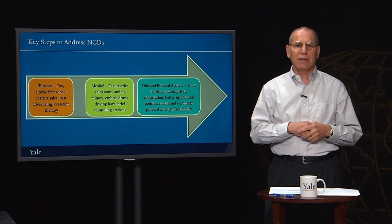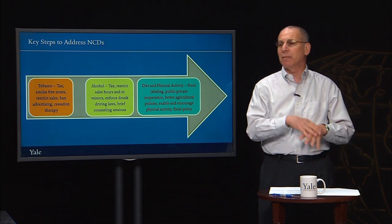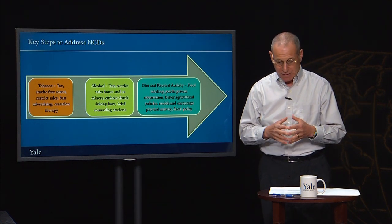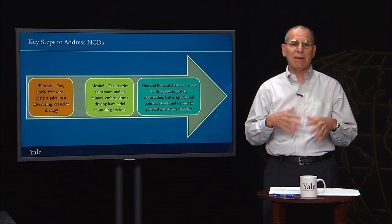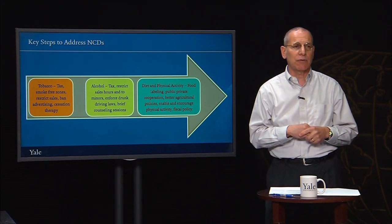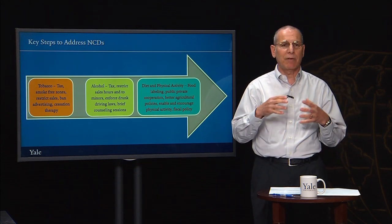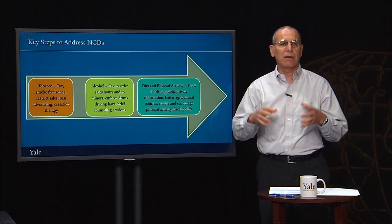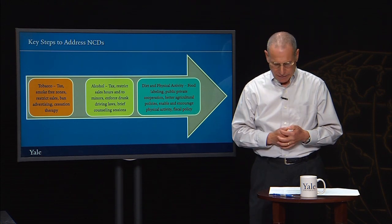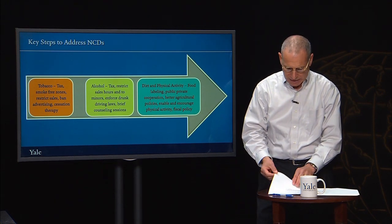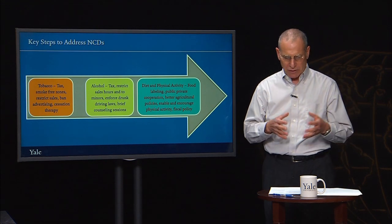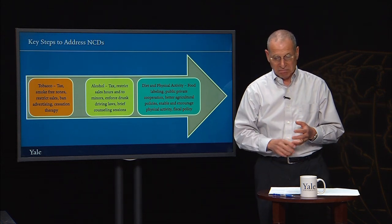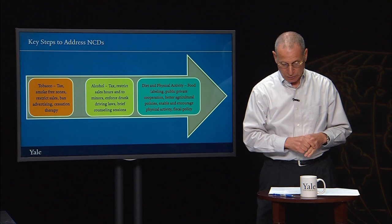The burden of mental health disorders is large, and the attention paid to them is small. There's a growing understanding of what can be done to prevent some mental disorders and to treat others, even in low- and middle-income countries where health systems are weak and the number of professionals trained in this field is very small. However, there's an enormous gap between what we know about mental health and what we do. Measures need to be taken to reduce some of the environmental risk factors for mental health disorders, such as abuse, bullying, intimate partner violence, and sexual abuse.